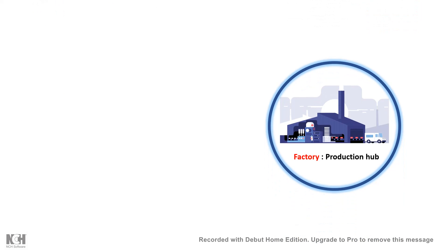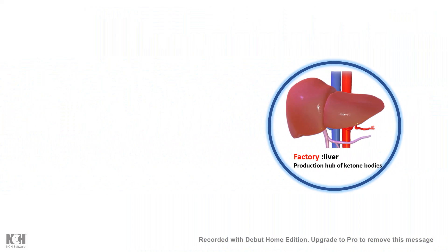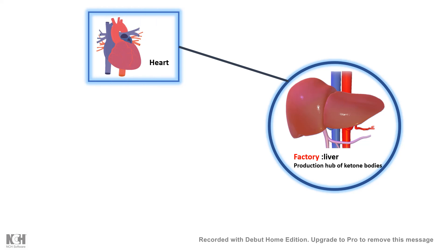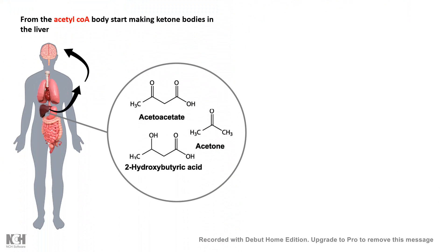Just like in any city there is a factory which produces a product that is then utilized in cities, towns, or villages — similarly, if we think about ketone bodies as a product, this product is produced by the liver in a certain situation known as starvation. And once produced in the liver, it is utilized in cardiac muscles, in the brain, and in the kidney. The question is: when does the body start making ketone bodies, and exactly how do several internal organs utilize them?